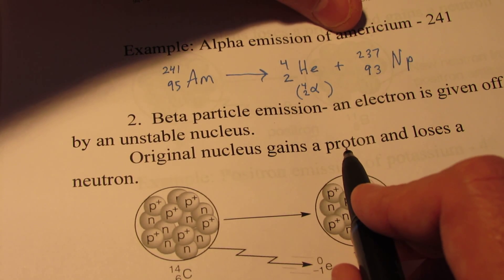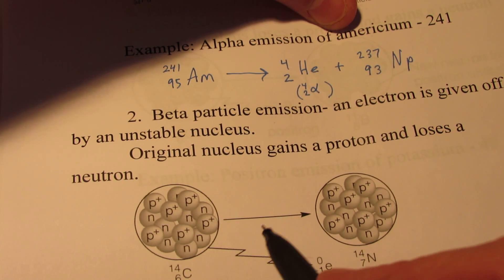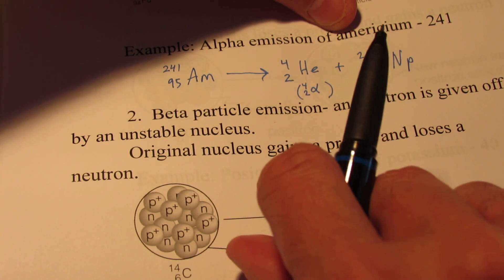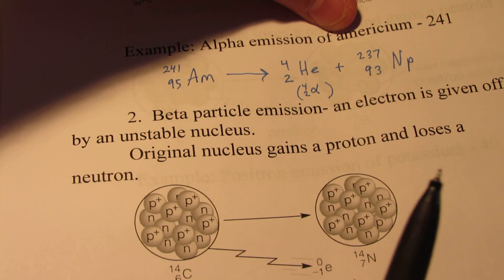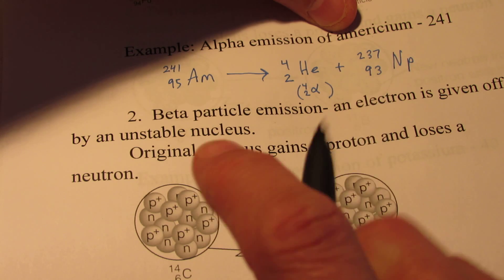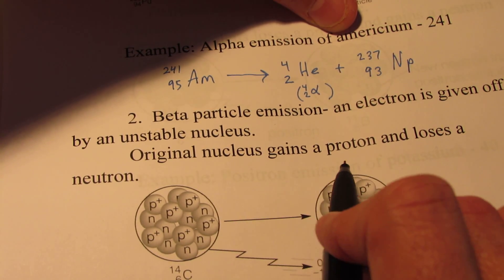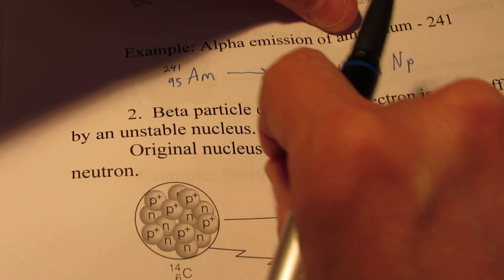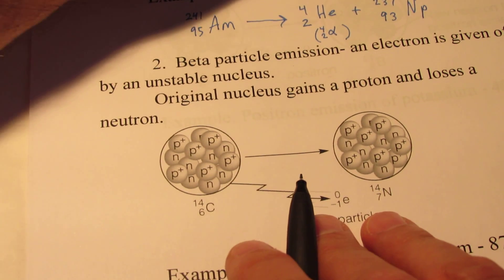Well, the nucleus actually gains a proton and loses a neutron. Now think about what happens when that occurs. Protons have a positive charge. That proton essentially turns into a neutron, a neutrally charged particle. So in the process... Sorry, I said that backwards. A neutron turns into a proton.